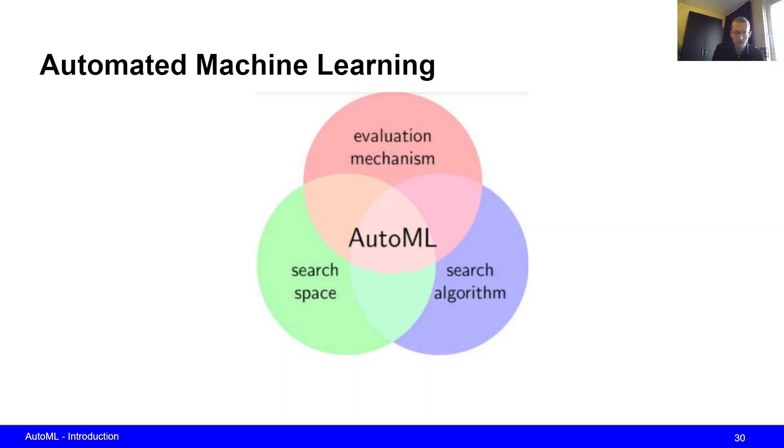Most automated machine learning methods can be thought of very abstractly in terms of these three components. The automated machine learning system of course needs to have a search space. The search space consists of all of the different hyperparameter values, maybe preprocessing steps, over which the agent can search. Besides the search space, the AutoML agent of course also needs to have a search algorithm which determines how it is going to search through this search space. In search we want to try to maximize the performance, so we need to have some kind of evaluation mechanism that allows us to distinguish candidate solutions in the search space from each other and which allows us to guide the search towards more and more promising or well-performing methods.